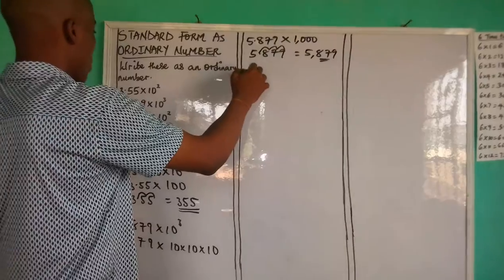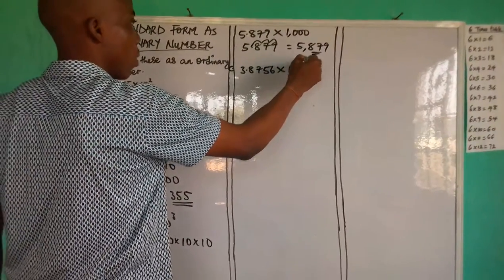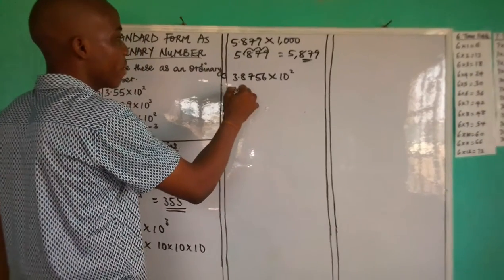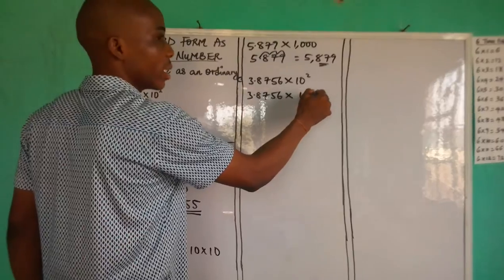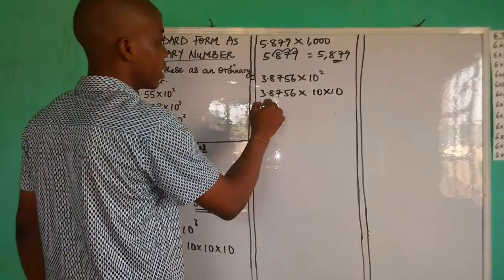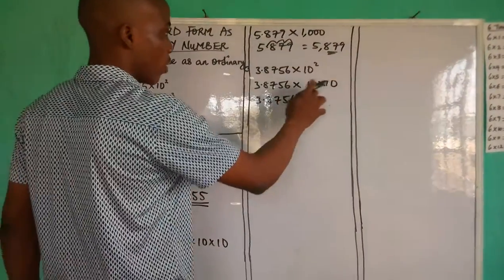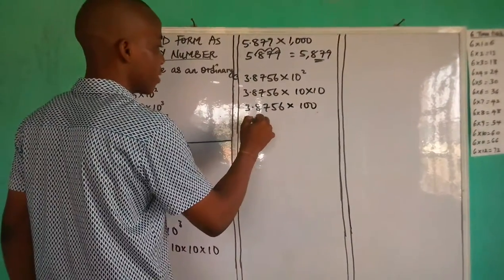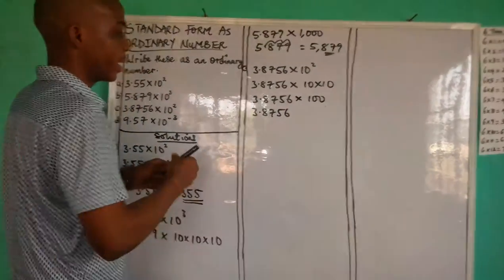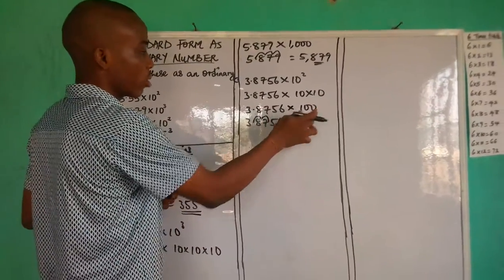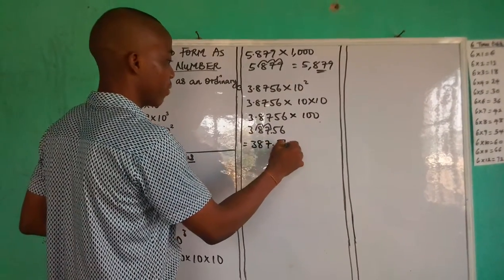Then we go with C. We have 3.8756 times 10 raised to the power of 2. So we have 3.8756 times 10 times 10, which is 100. We move from the decimal point twice to the right — 1, 2 — because this is 100. So we shall have 387.56. We have expressed it as an ordinary number.